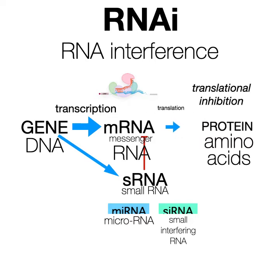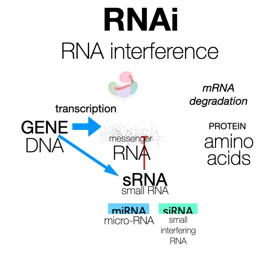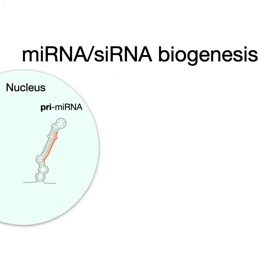Upon binding, you get translational inhibition and mRNA degradation — basically a decrease in the amount of protein made from that specific messenger RNA. In a little more detail: microRNA gets transcribed in the nucleus like a normal gene would, except that instead of a messenger RNA, you get this long transcript that folds up into a long hairpin structure, which we call primary microRNA, or primary miRNA.